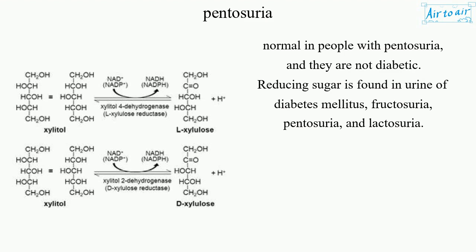Reducing sugar is found in the urine of diabetes mellitus, fructosuria, pentosuria, and lactosuria.